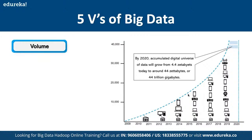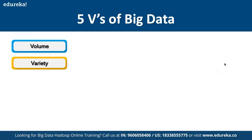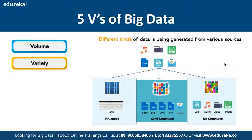The second V is Variety, which means data coming in different formats. We have structured data, semi-structured data, and unstructured data. Structured data includes relational databases and DBMS systems. Semi-structured includes emails, CSV files, JSON scripts, and XML files. Unstructured data includes all multimedia elements.